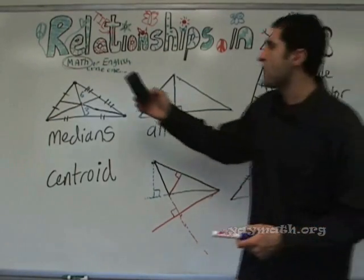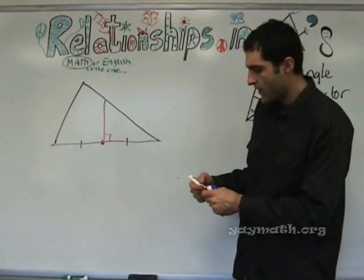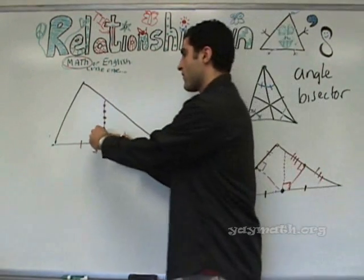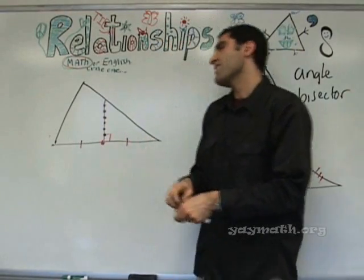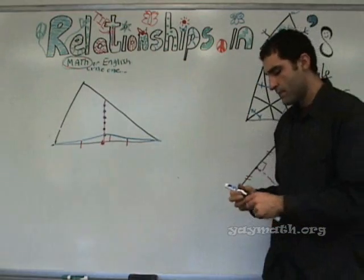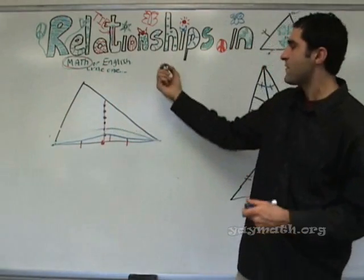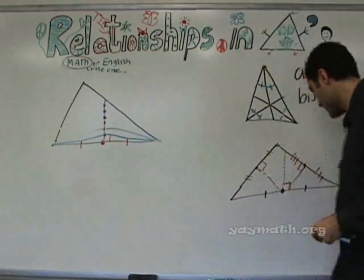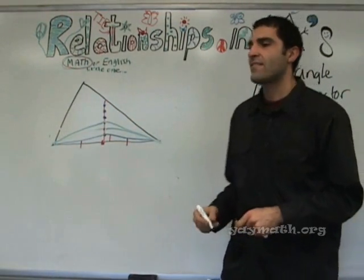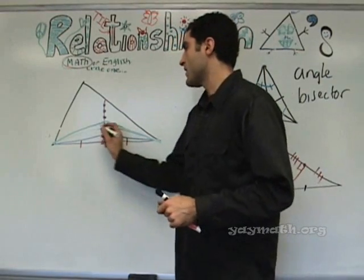There's a relationship about the perpendicular bisector I want to mention, and then we are finished. Every point on it is the same distance from both of these vertices. This distance from here to here is the same as this distance from here to here. These points are equidistant.